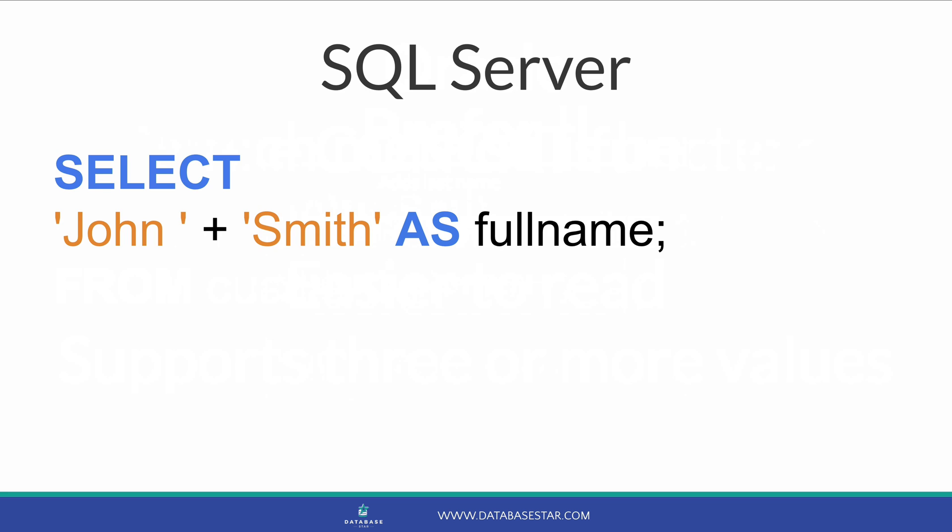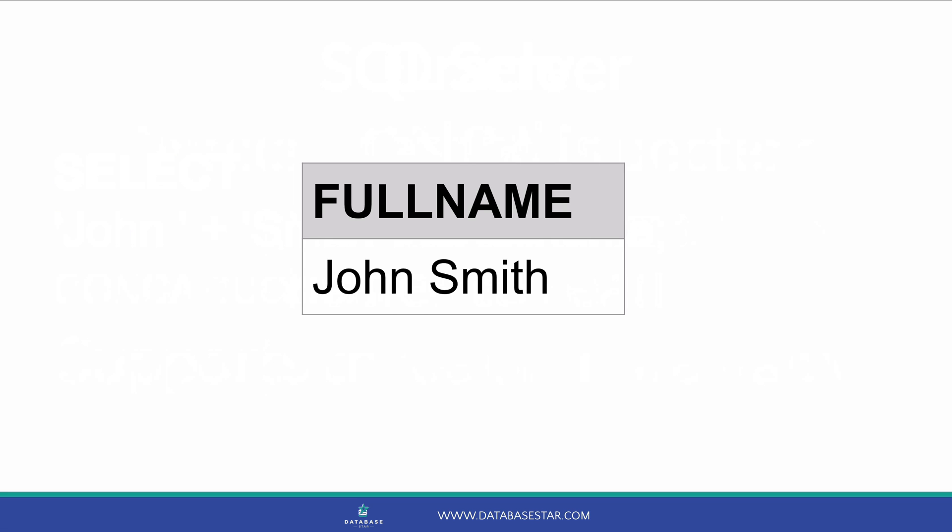In SQL Server, concatenation is done with the plus symbol. It works in the same way as double pipe in Oracle. You can also use the CONCAT function. To concatenate two string values with the plus symbol, you select the first string, then plus, then the second string. In this example, we select 'John' with a space, then plus, then 'Smith'. We don't need to select from DUAL as that's an Oracle-specific feature. If we run the query, we can see the full name of John Smith.